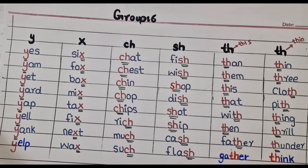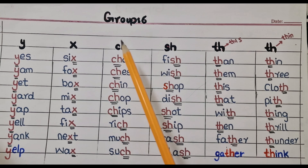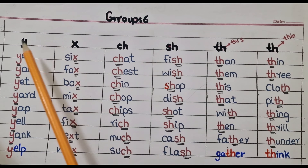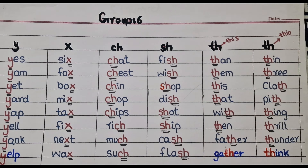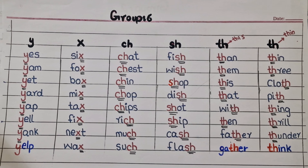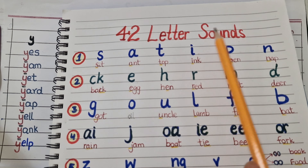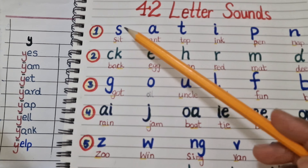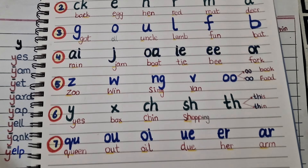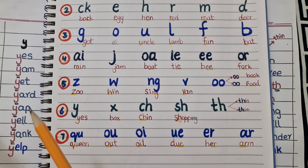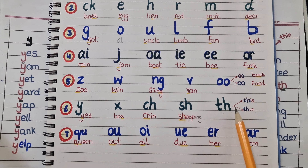Hello friends, welcome back to my channel. In today's video we are going to learn Group 6 letter sounds and their blending words. As you know, in my previous video we have learned the 44 letter sounds of English, based on seven groups. But in this video we will only learn Group 6 letter sounds and their blending words.